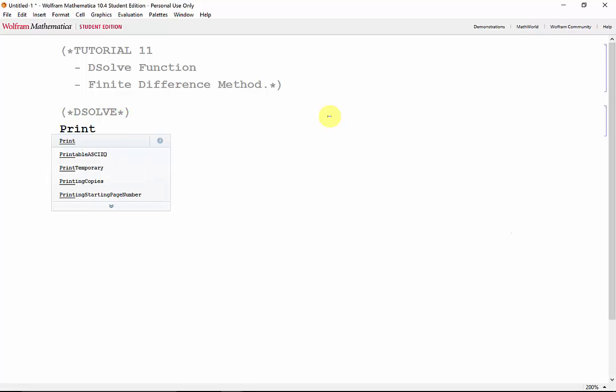The syntax is DSolve, equation 1 equal to a constant 1, equation 2 equal to a constant 2, and so on, the function u and the variable x, where the list of differential equations is solved for the function u with respect to the independent variable x.